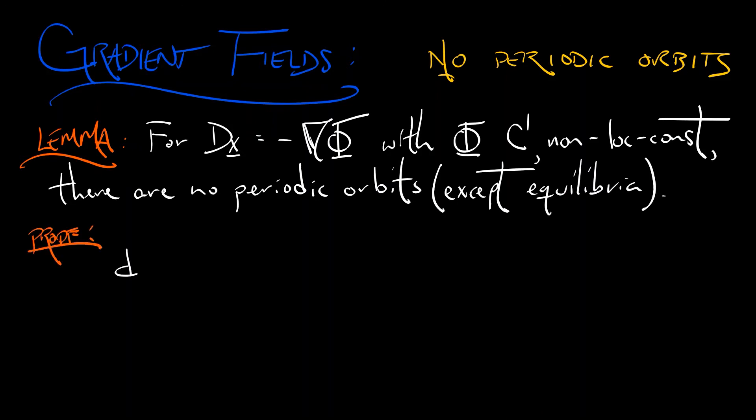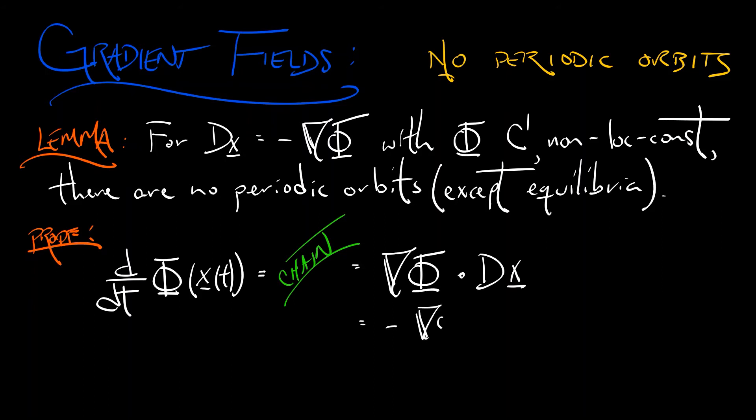Here's a proof. If you take the derivative of phi along a solution x of t, with respect to time, then the chain rule says that this is the gradient of phi dotted with dx dt. But dx dt is minus grad phi. So that's minus grad phi dot grad phi. That's minus the length of grad phi squared, which is going to be strictly negative or maybe equal to zero at an equilibrium.